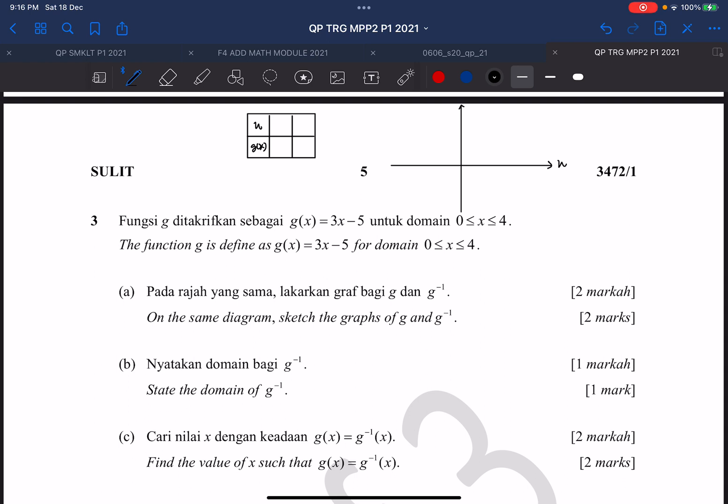Function G is actually a linear graph, a linear function, which is 3x minus 5, and the restricted domain is between 0 to 4.